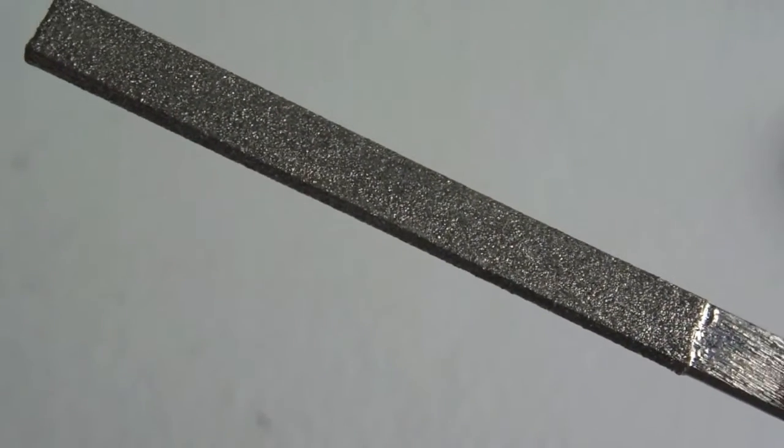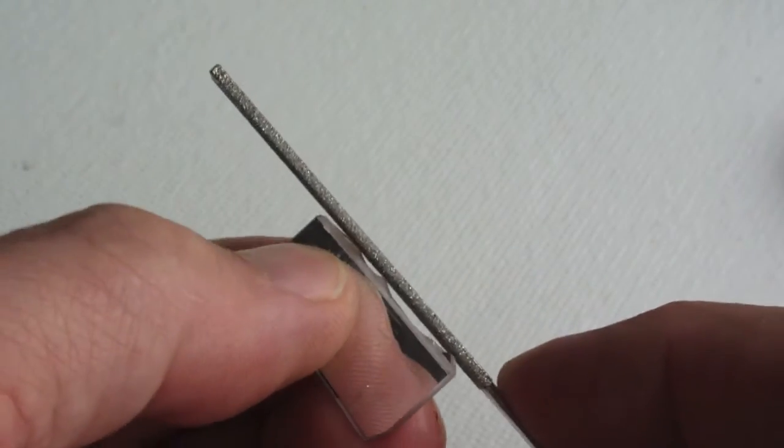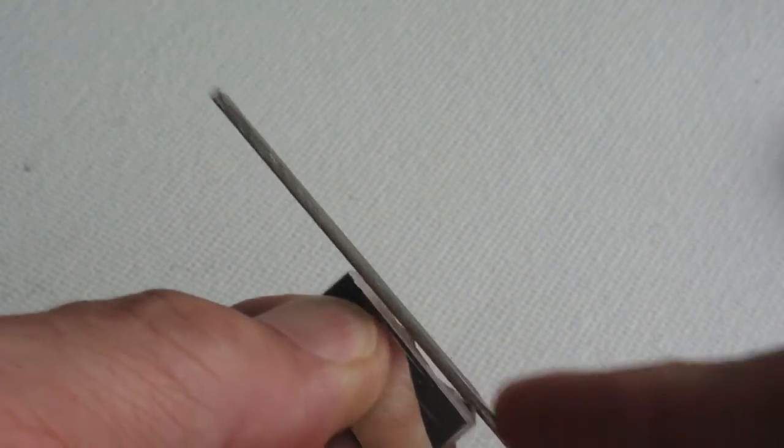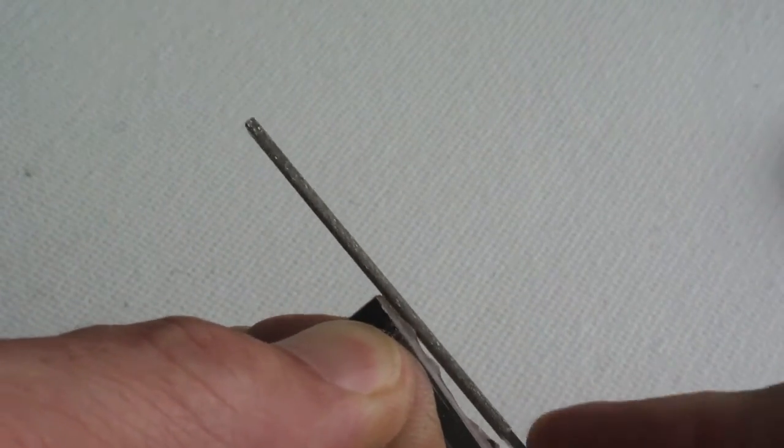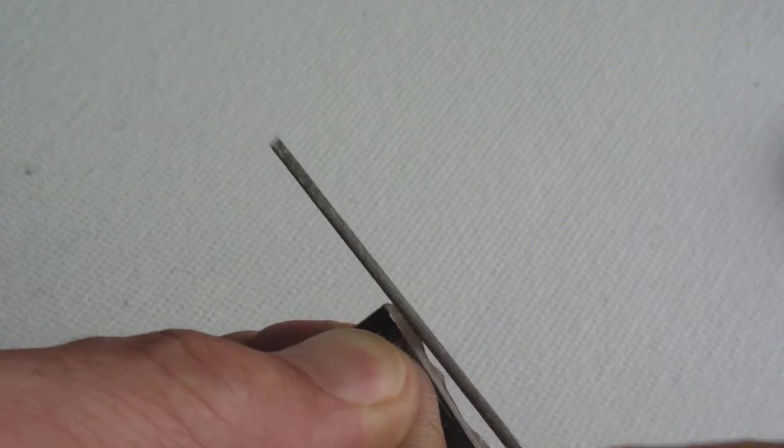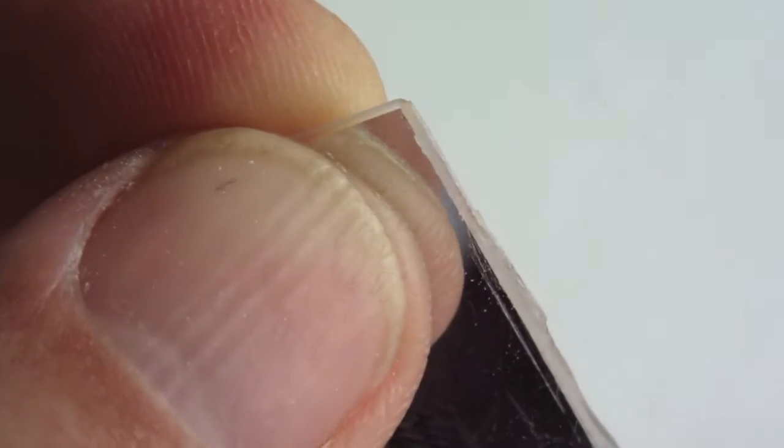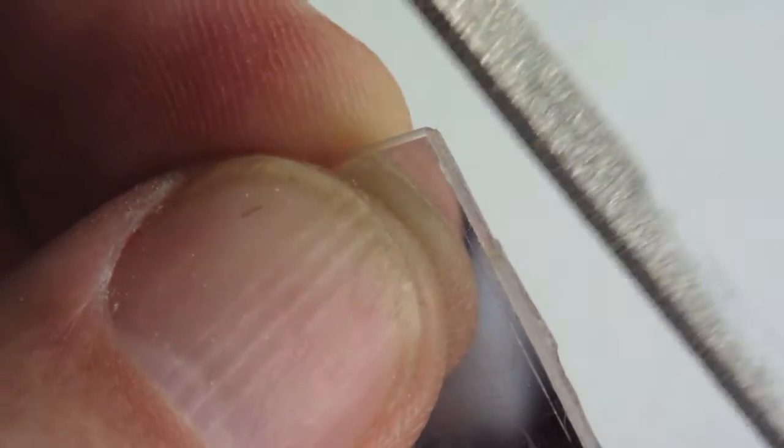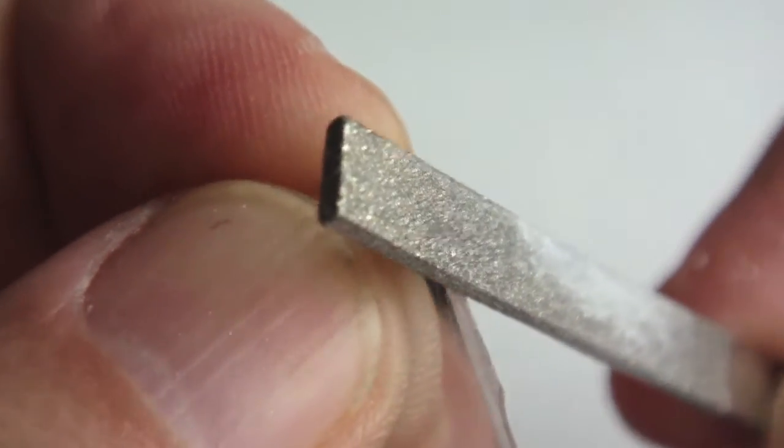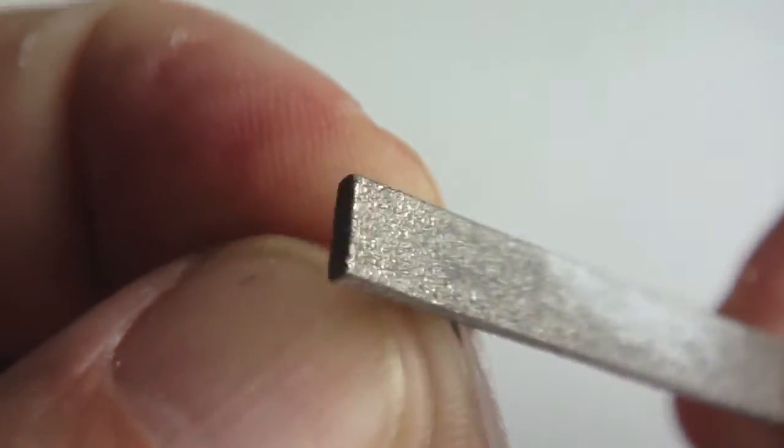Okay, now we're going to take a file, another diamond file, a flat edge file, and clean up the sharp points. Just rub the file gently over the points until they're rounded off a bit. Again, gentle pressure, patience, and a little bit of time will prevail and you'll clean the edge up nicely.